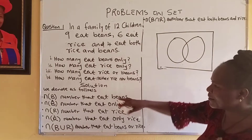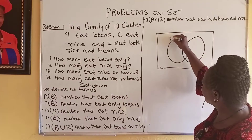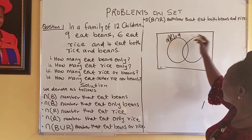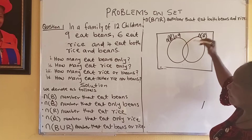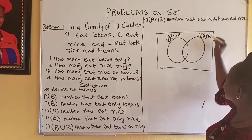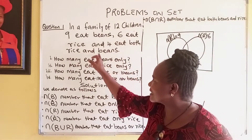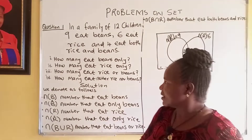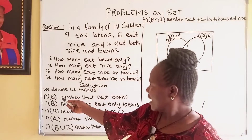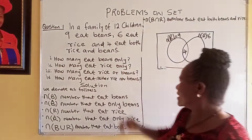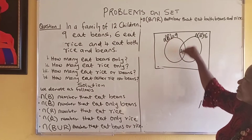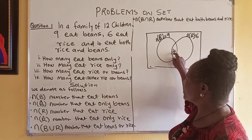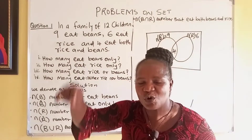This is the number of people that eat beans — the whole of this circle is 9. The whole of this circle for rice is 6. We are told that 4 eat both rice and beans, so that is explicit in the question. Now, the question is: how many eat beans only? Those that eat beans is 9. If you want to get those that eat beans only, what you do is remove those that eat both beans and rice, so that you can have those that eat only beans.